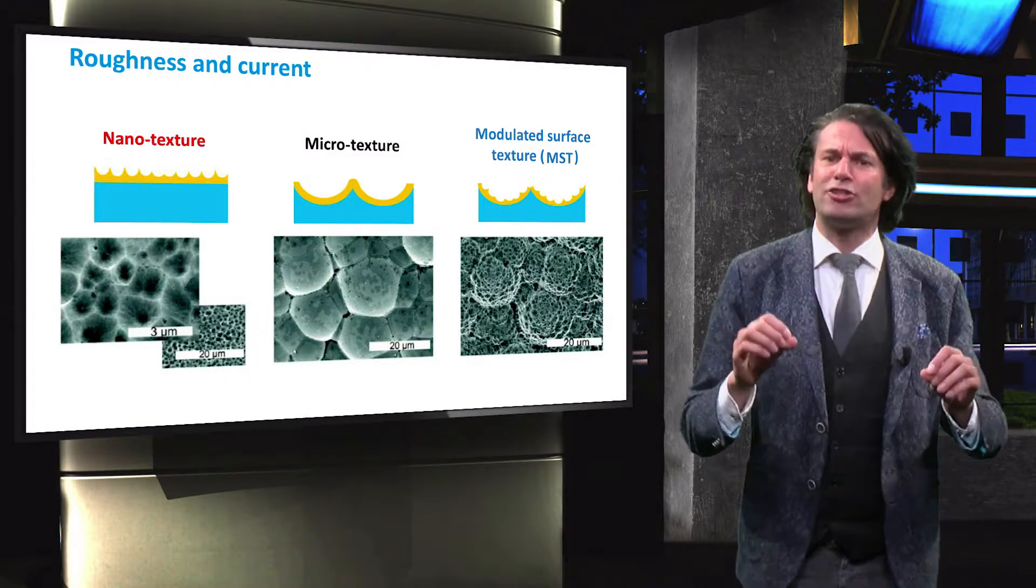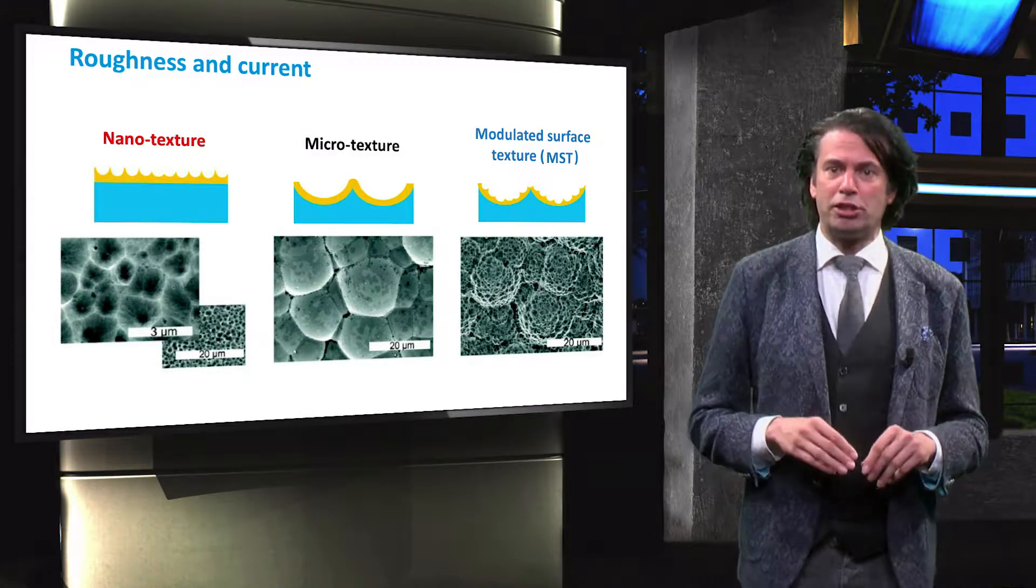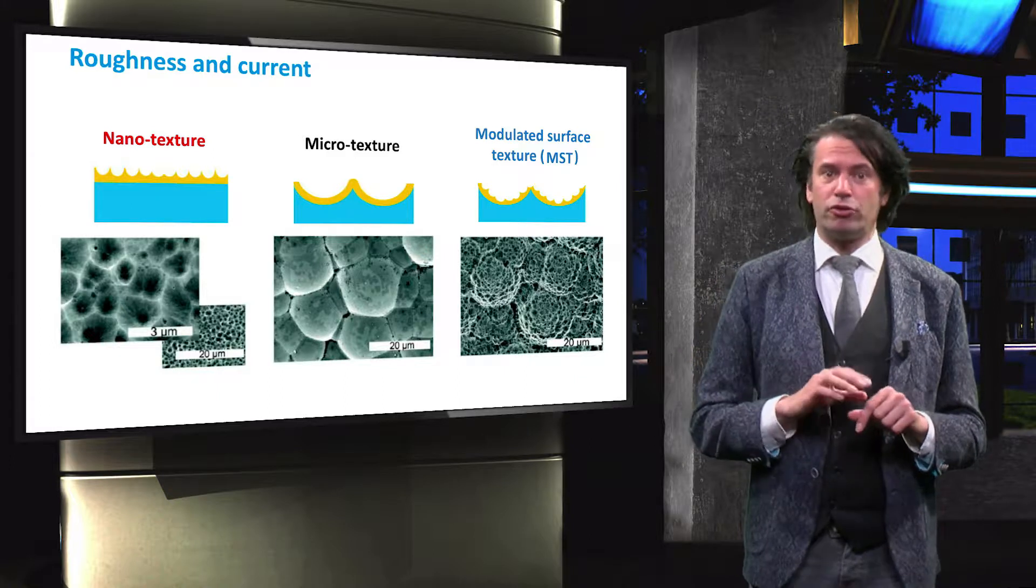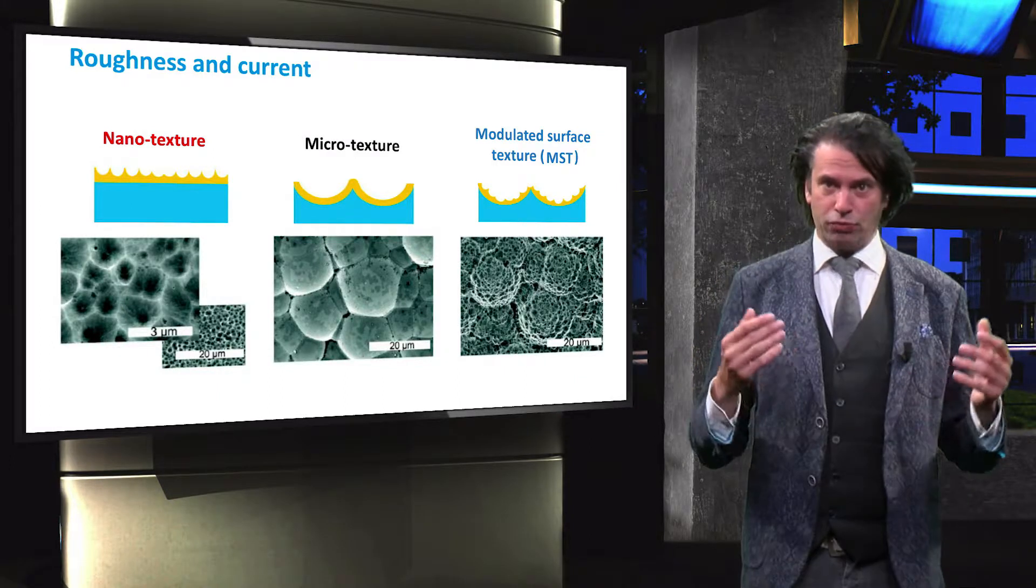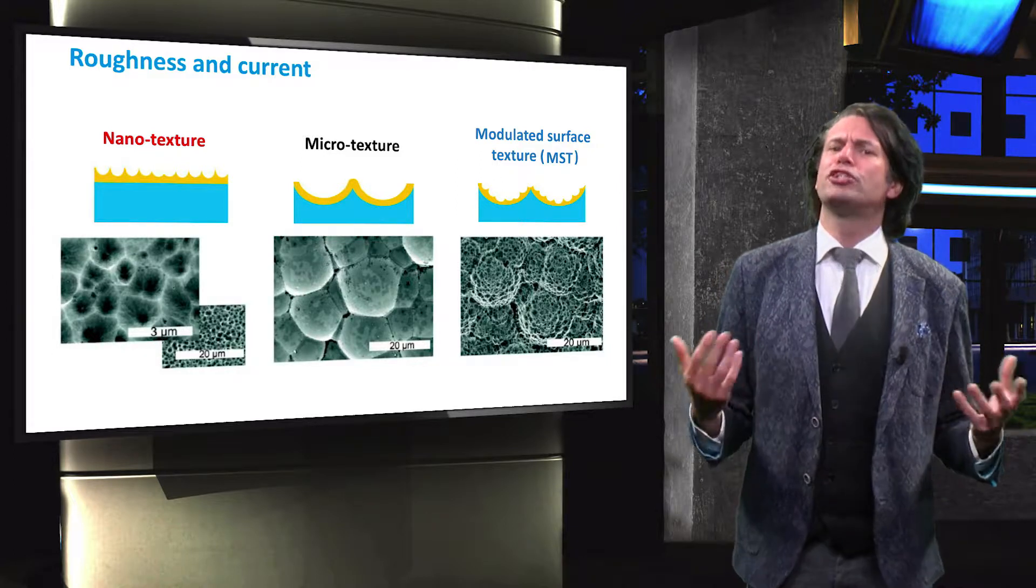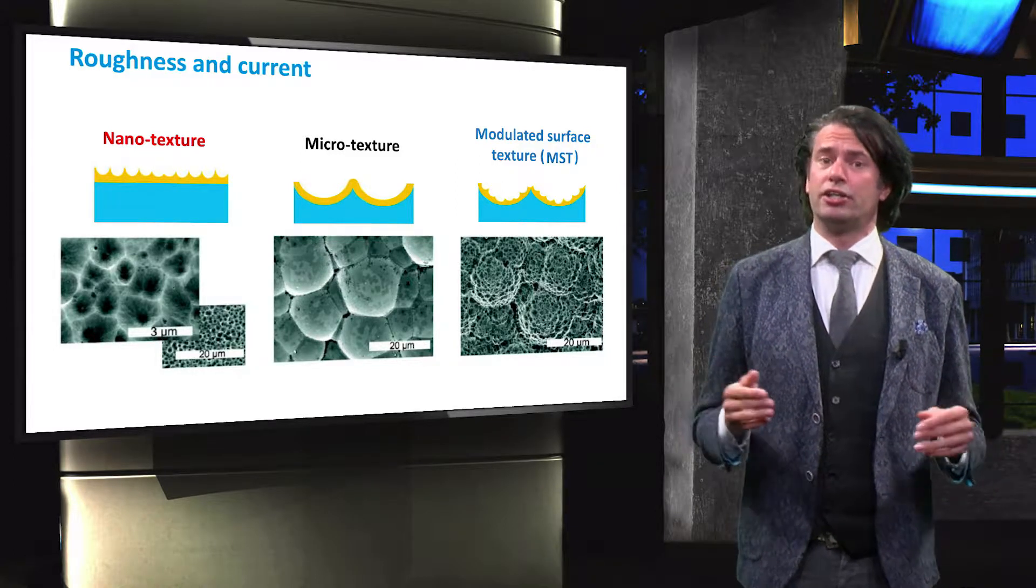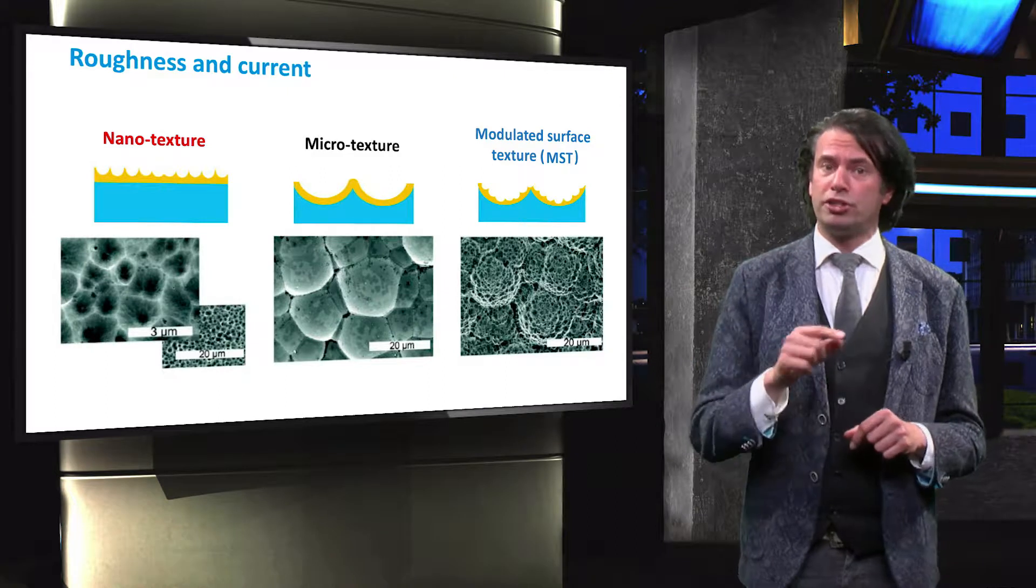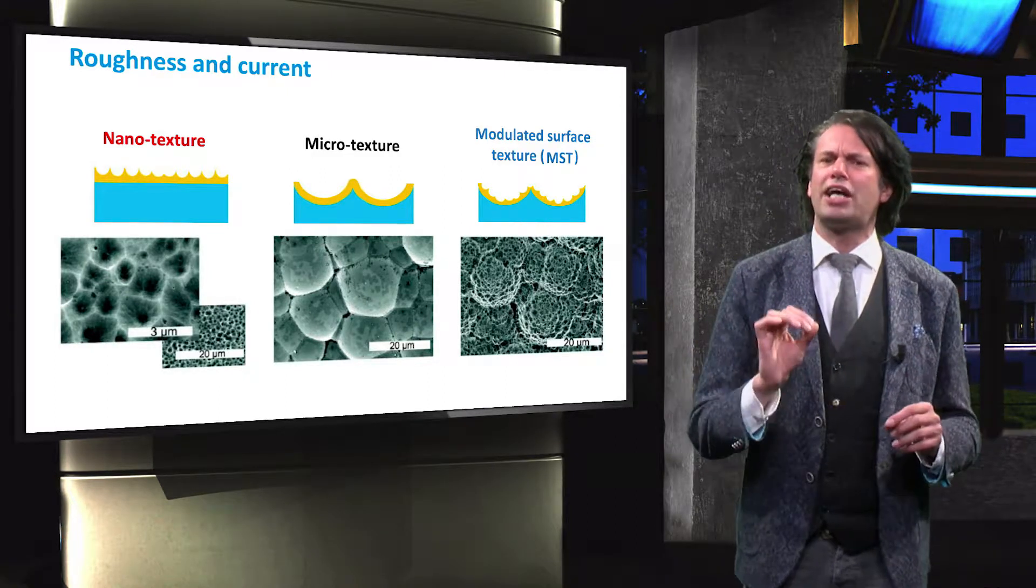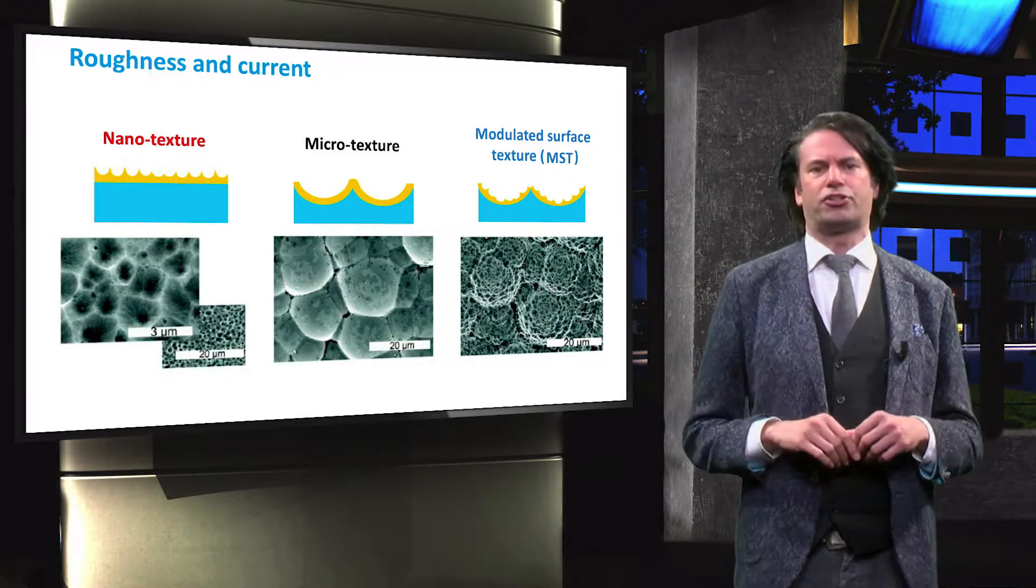The final cell has modulated surface texture, which means it has nano-sized features on top of the micro-sized features as we can see in the figure. This has been obtained by first applying a large-scale texture in the glass substrate before depositing the zinc oxide. Finally, the zinc oxide layer was exposed to a short etching step to realize the additional nanoscale texturing.